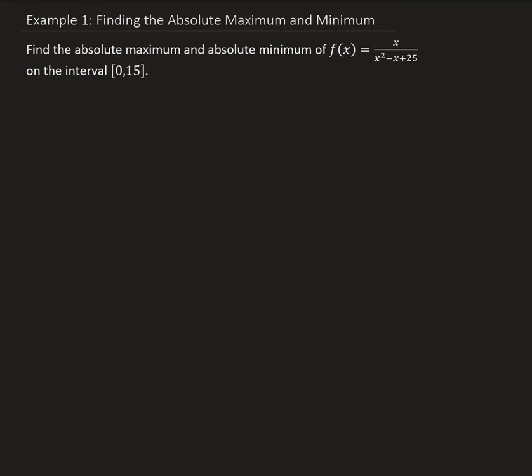In this example, we want to find the absolute maximum and absolute minimum of the function f(x) equals x divided by x squared minus x plus 25, on the interval from 0 to 15. We're only going to find the maximum and minimum with respect to this interval, where the interval is given from 0 to 15.